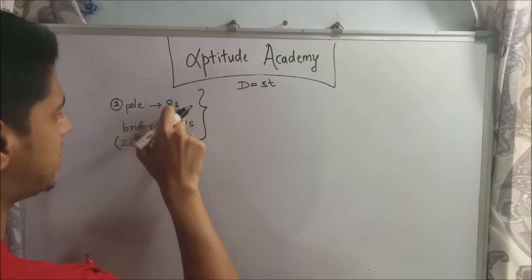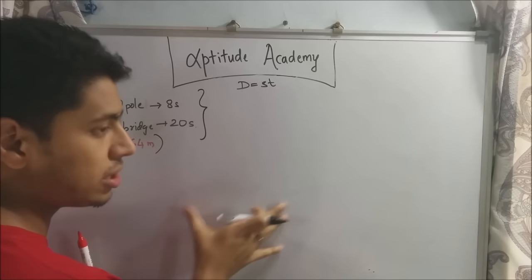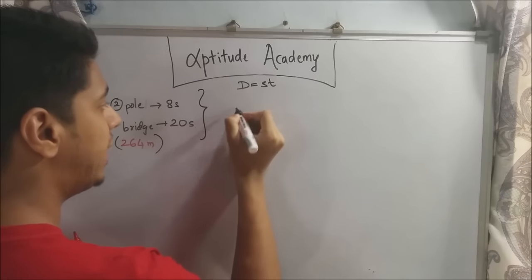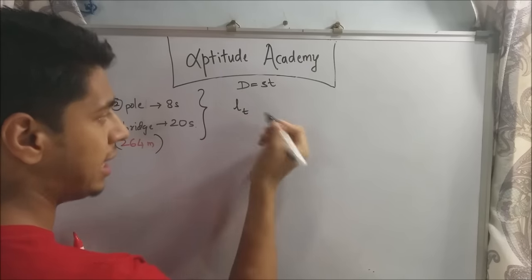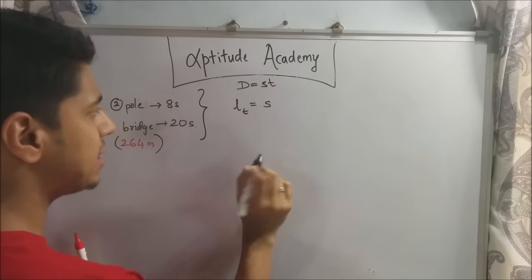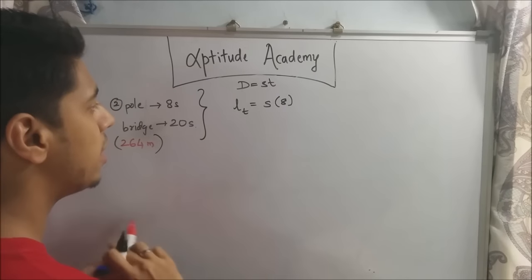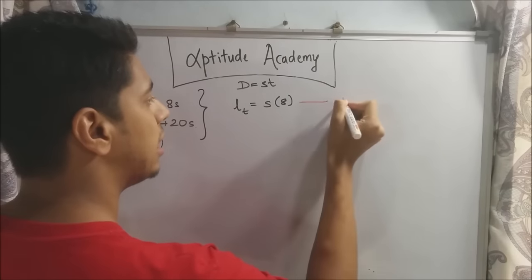So now if you apply d equals st for the first scenario, you know that when a train crosses a pole, it traverses its own length. So your d here will be length of the train, speed is s and the time taken will be 8 seconds. So now this is your first equation.